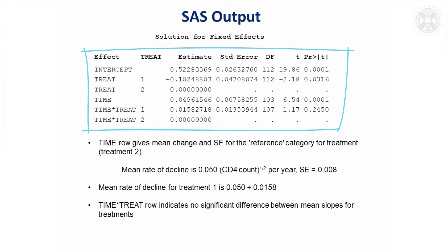And then the interaction shows, we've got a non-significant interaction. That's the interaction between the slope and treatment, which says there's no difference in the slopes for the two treatments.